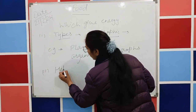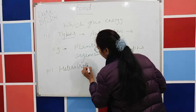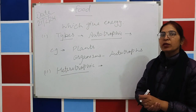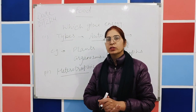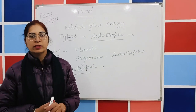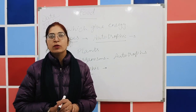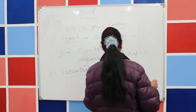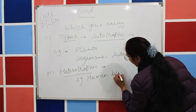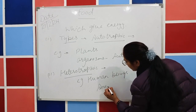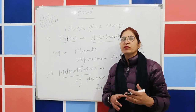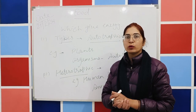In heterotrophic nutrition, the organism depends upon the plant for their nutrition or food. For example, human beings and other animals come under this category. The organisms that show heterotrophic nutrition are known as heterotrophs.